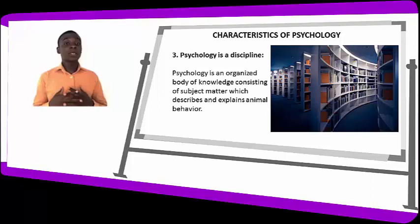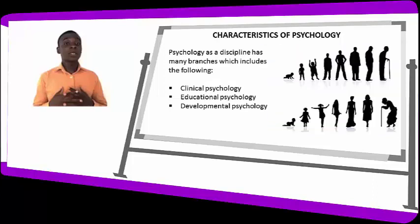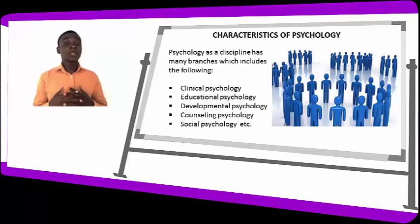Psychology is a discipline and it has so many branches. Let's look at some of the branches of psychology: we have clinical psychology, educational psychology, developmental psychology, counseling psychology, and social psychology, among others. We will soon get to the point where we look at the branches of psychology in more detail, but these five are the branches listed in this lesson.